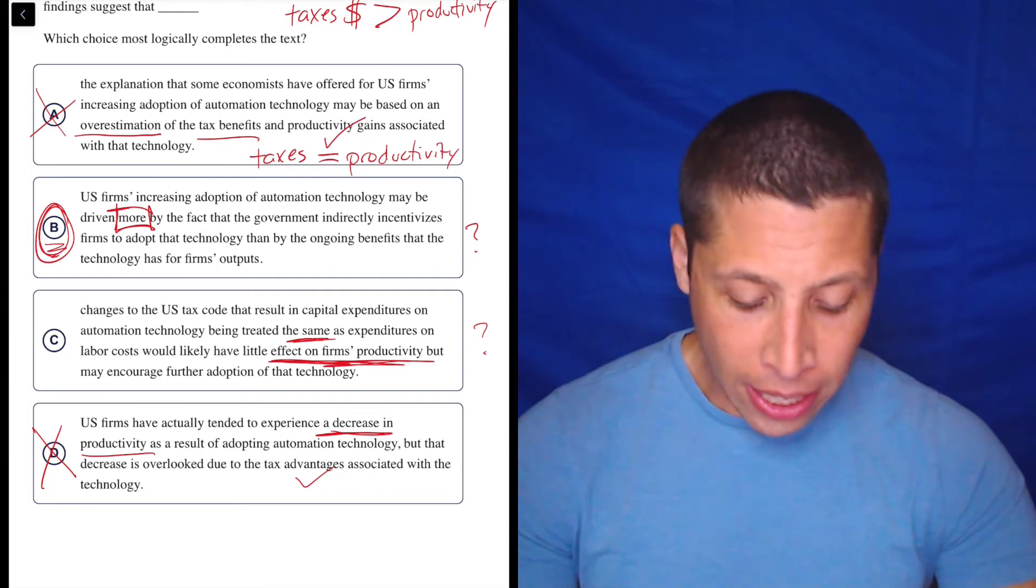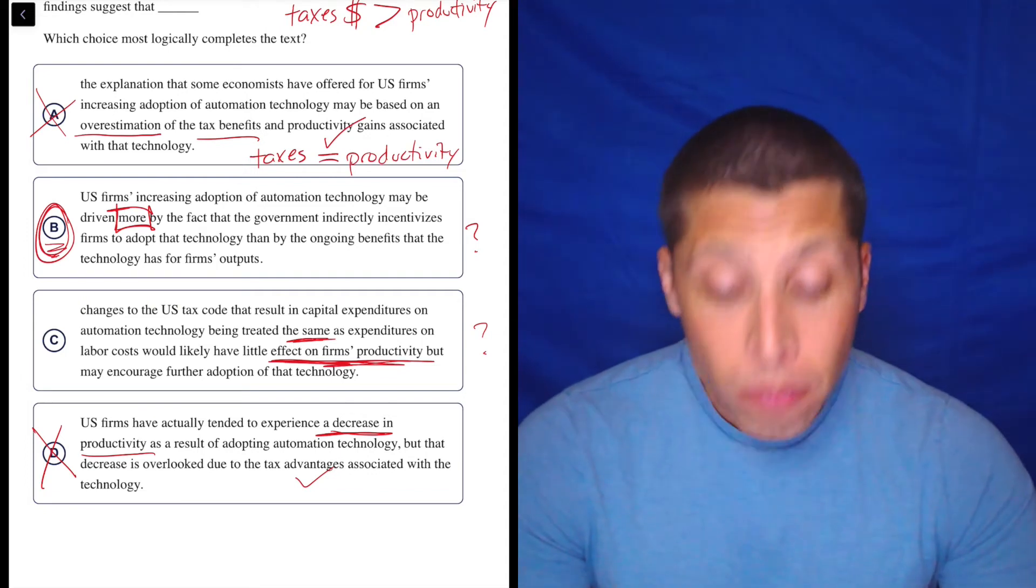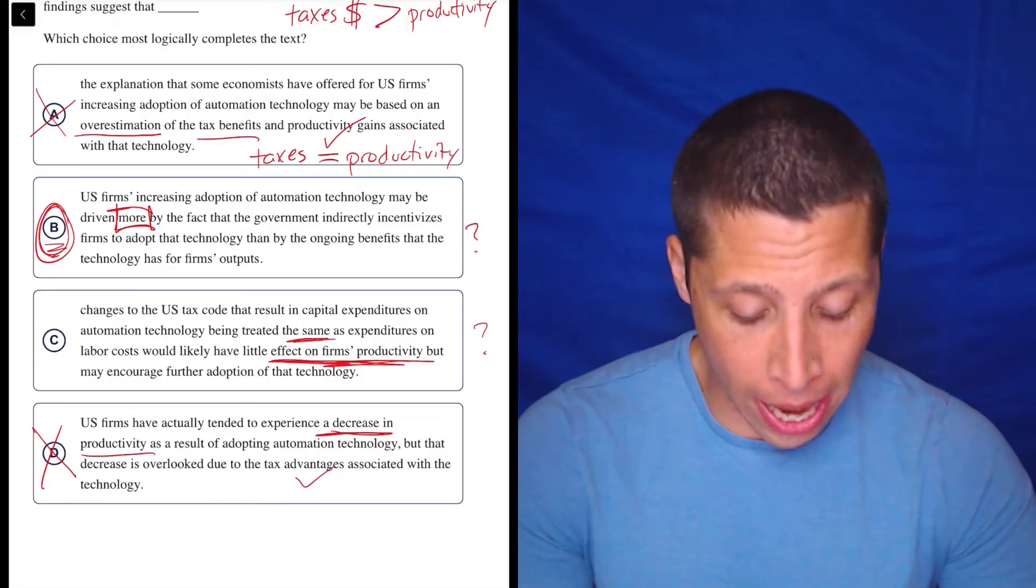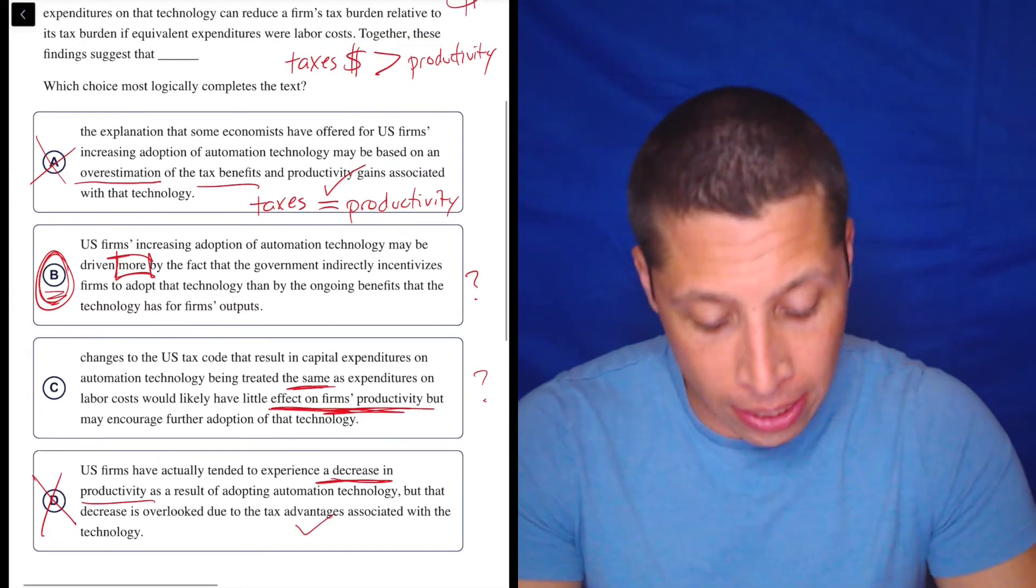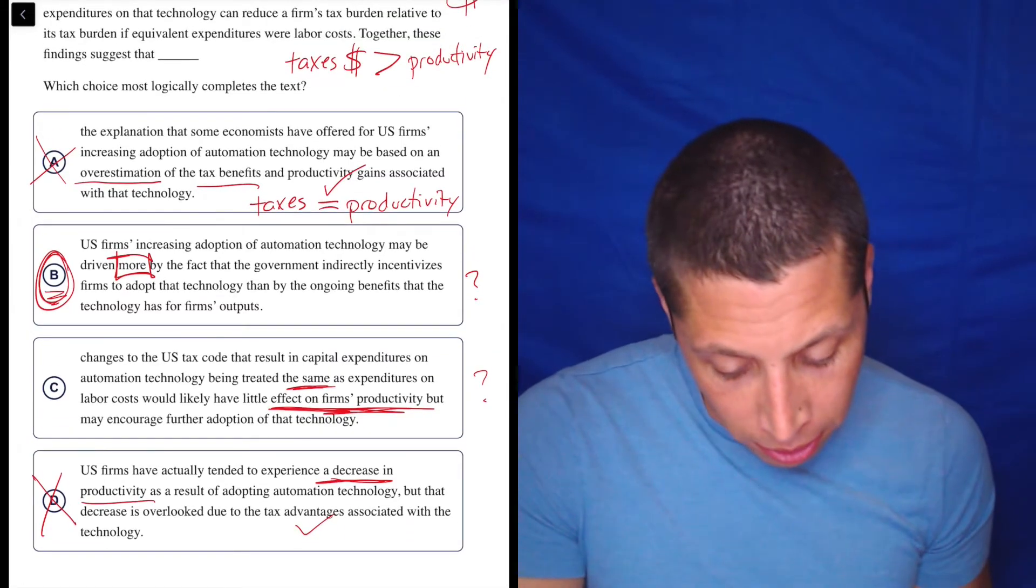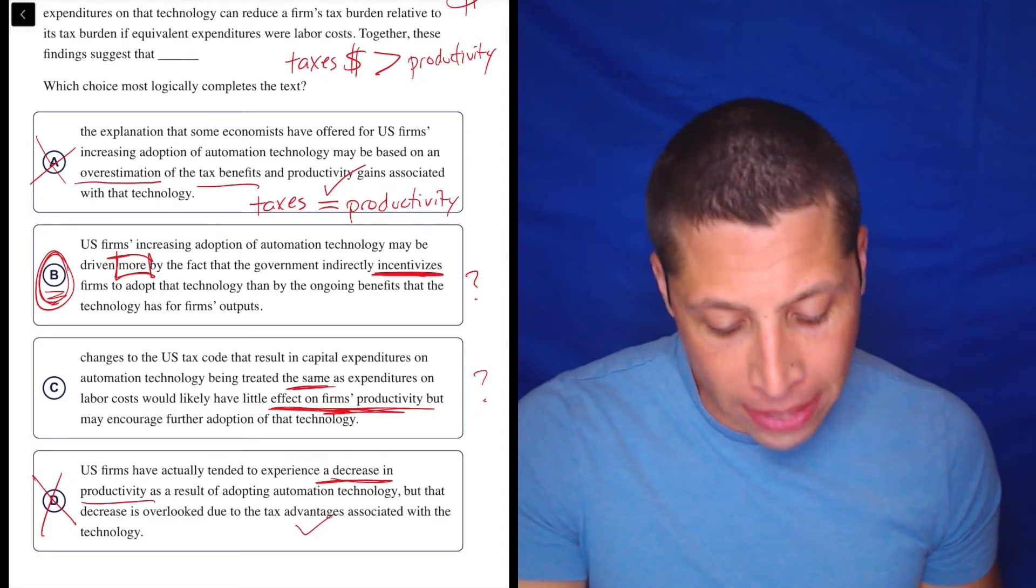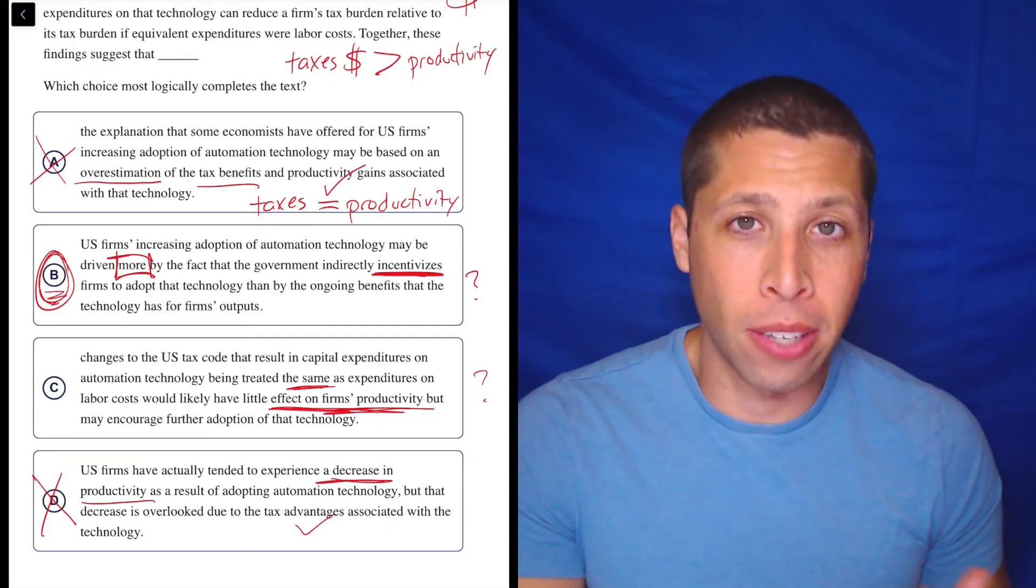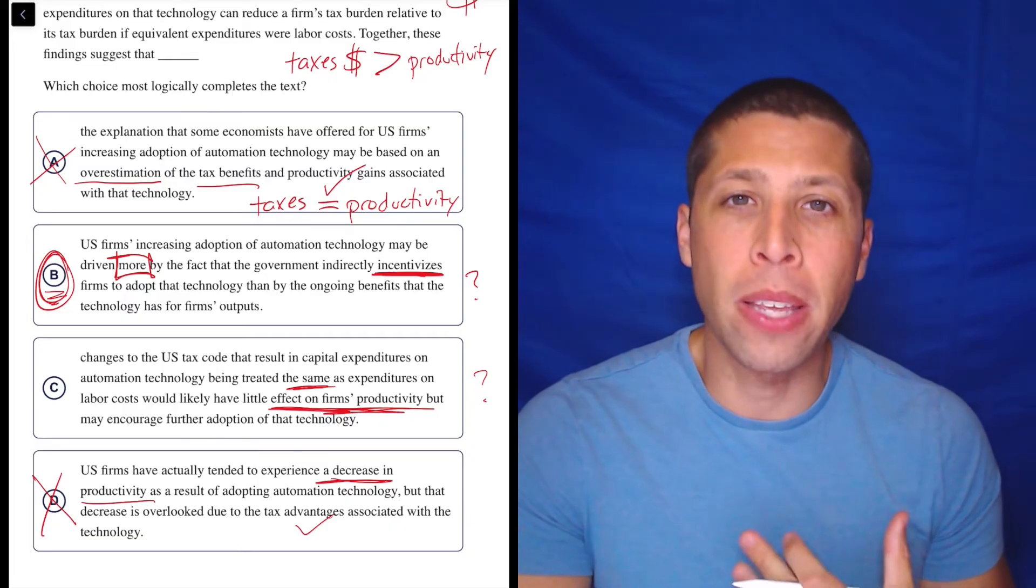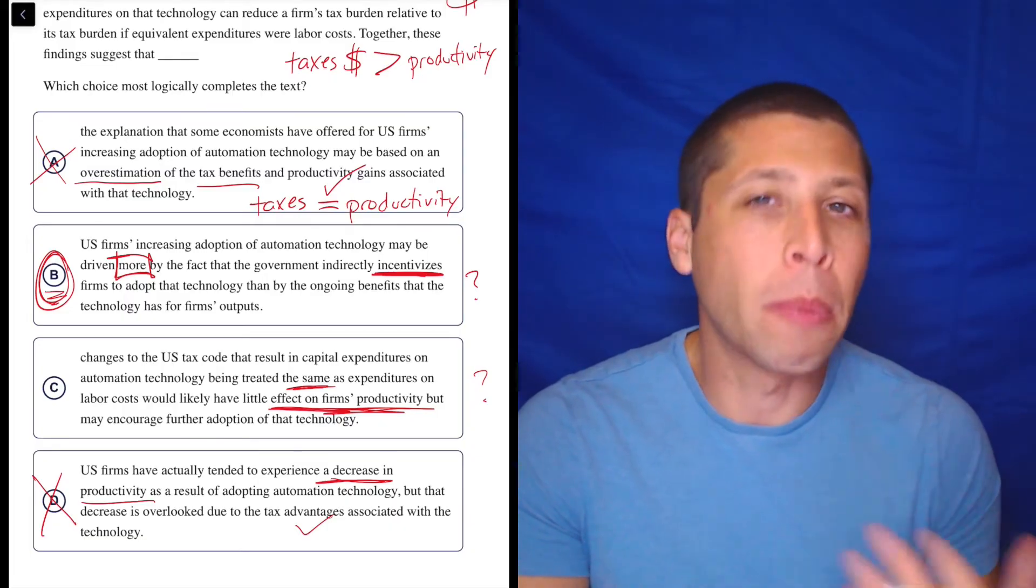And that is the answer. And to kind of get into why, we can look at some of these other words in B and really connect it back to our dumb summary very easily. Let's look at the word, the fact that the government indirectly incentivizes firms to adopt that technology.